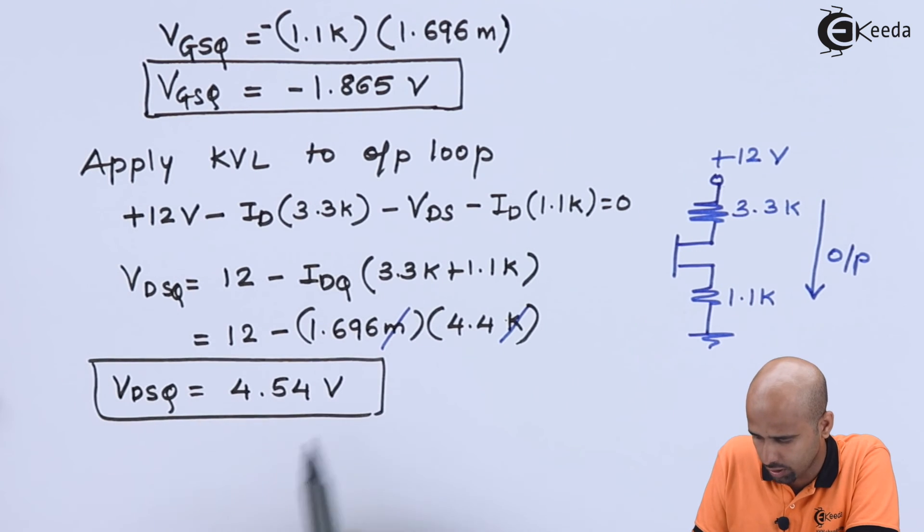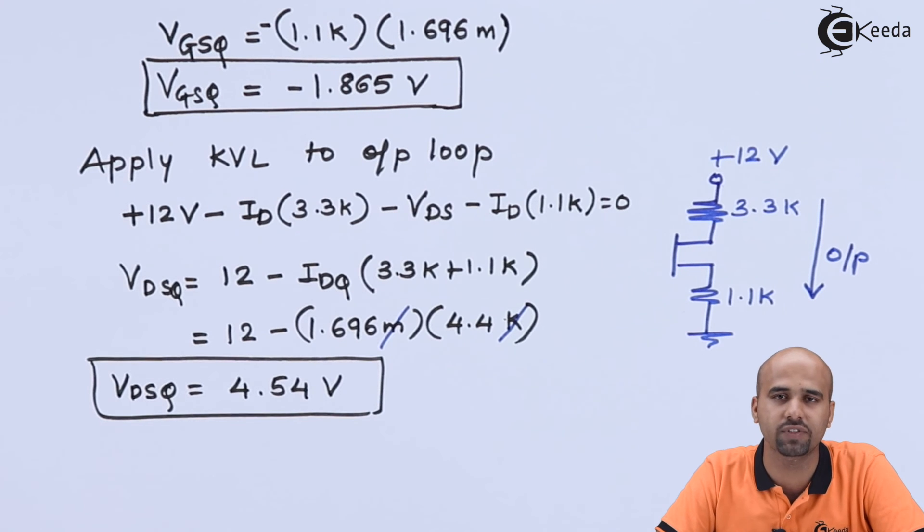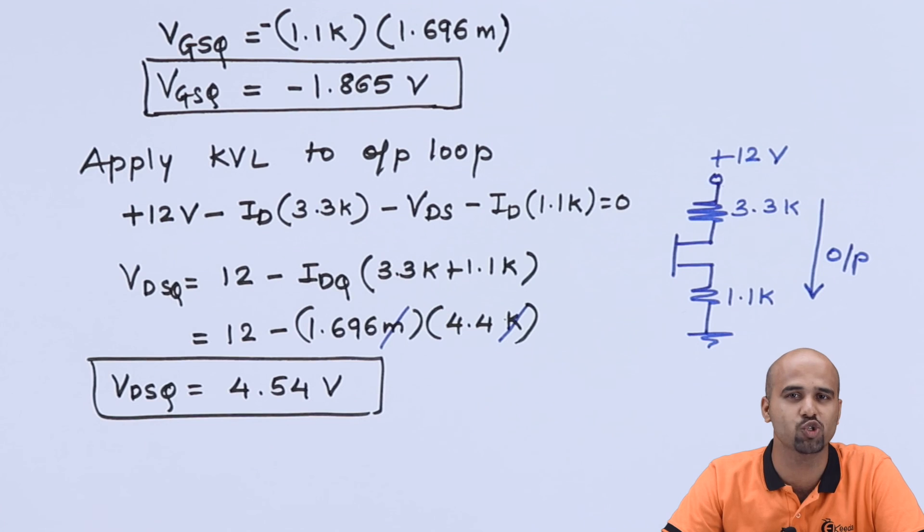We have got the third parameter, that is VDSQ. So it's a very simple numerical where we have got IDQ, VGSQ, and VDSQ by just following all the steps that I have given you in the previous video lecture. Thank you so much for watching this particular video. Learn more and more ADC along with me, along with Ikeda videos. Thank you so much.